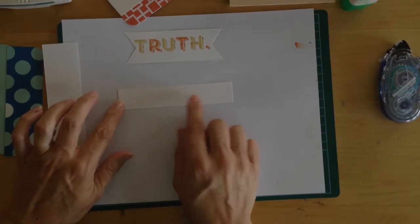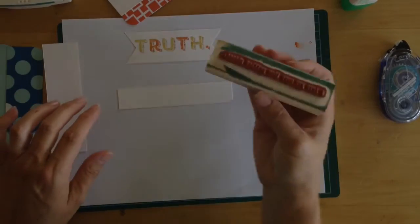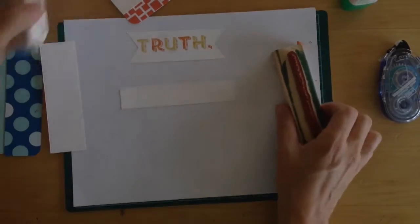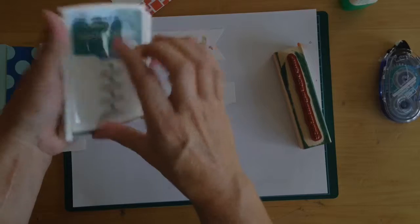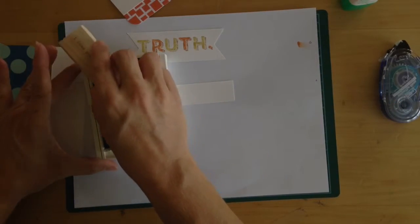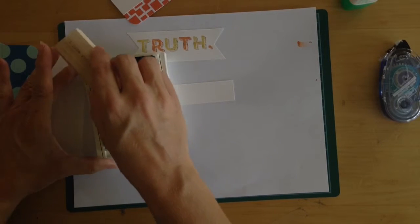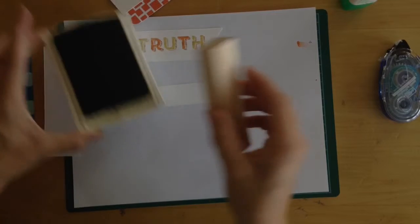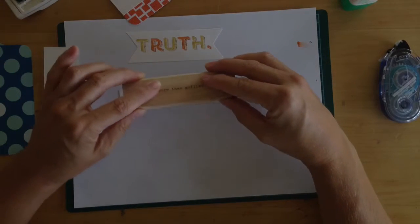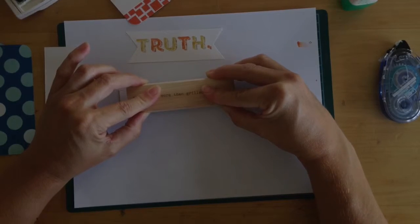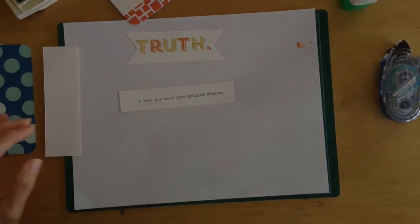Now on the smaller strip is what I'm going to stamp my sentiment on, which is 'I love you more than grilled cheese.' And I'm going to take the Lost Lagoon because it coordinates really well with all the colors here. And you could use any of the in colors from last year. And I'm going to stamp that right on my one inch. There we go. That's done.